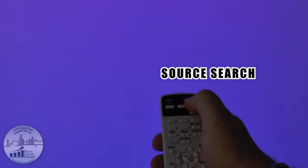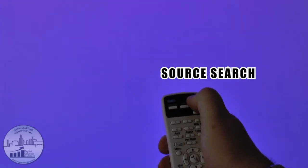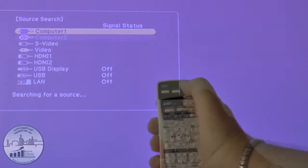On the remote unit, there's a button that says source search. It's in the top there. You press that, and hopefully, it's found that there's something in the HDMI, but no picture. Now we have to go back to the computer and check our settings.